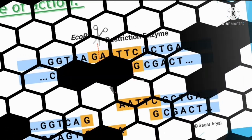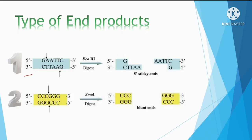After cleavage, two types of products are formed: sticky ends and blunt ends. Sticky ends are also called unequal or overlapping ends, where the two strands are cut at different positions leaving single-stranded overhangs. Blunt ends are where both strands are cut at the same position, producing equal, flush ends with no overhangs.